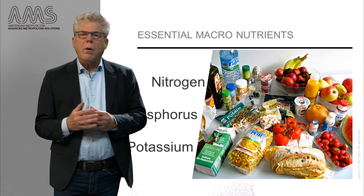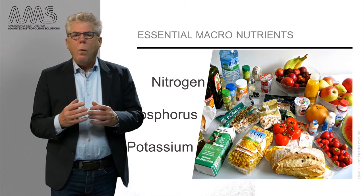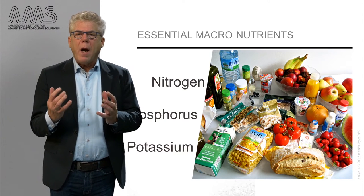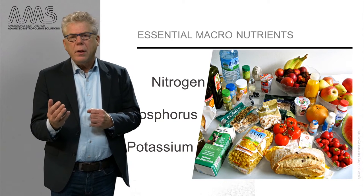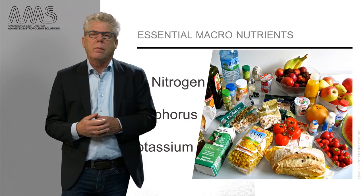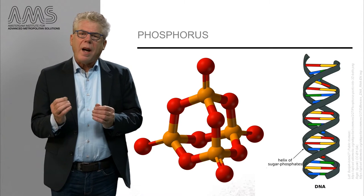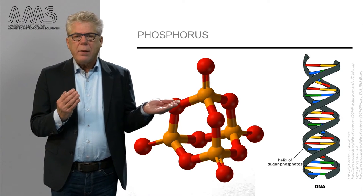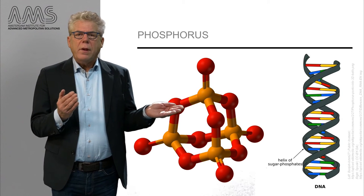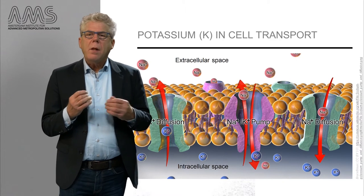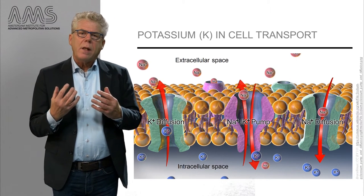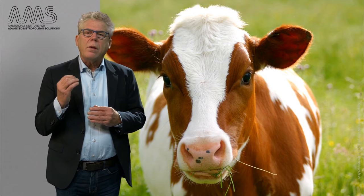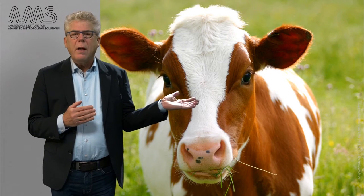The food you consume also contains nutrients. One group of nutrients are the so-called essential macronutrients: nitrogen, phosphorus and potassium. Nitrogen and phosphorus are essential elements in DNA, ATP — the energy mediator in living cells — cell membranes and protein structures. Potassium is among other things essential to maintain the transport mechanisms in your cells. These nutrients are essential for you, but also for all other forms of life, including the crops and livestock that become our food.